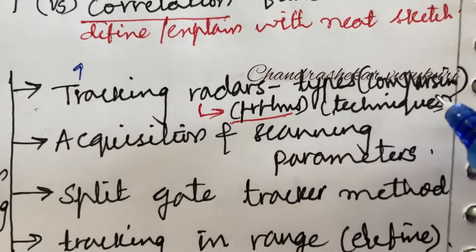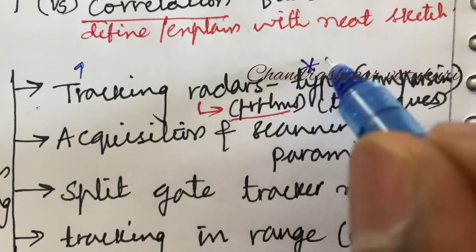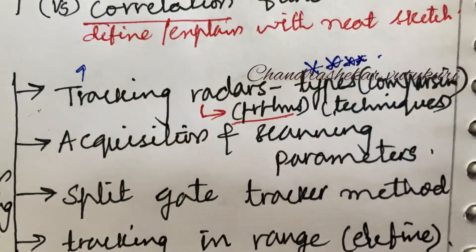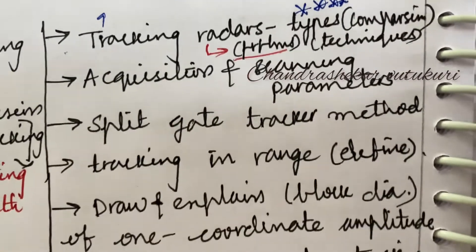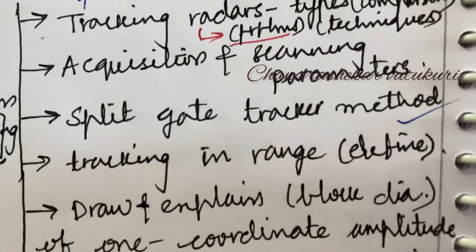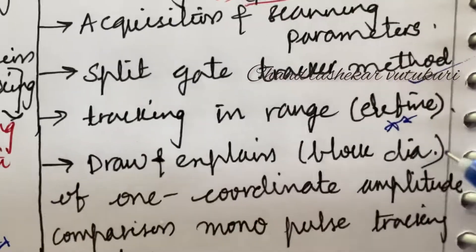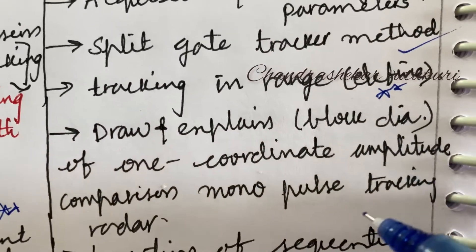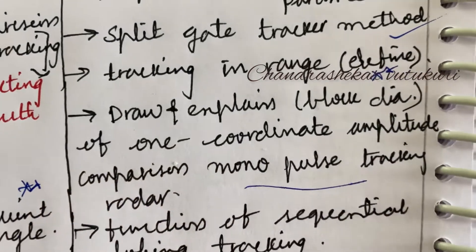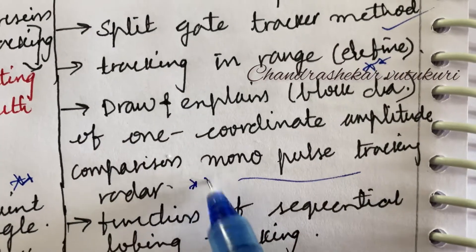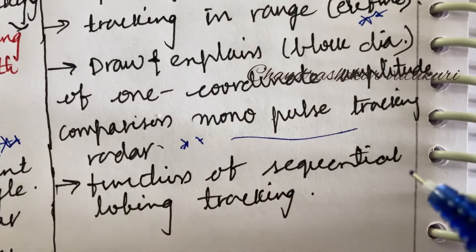The different techniques may be one of the gunshot questions which may occur in the question paper for a five-mark question. Acquisition and scanning parameters, and the split gate tracking method, are said to be top-most questions. Tracking in range is a short question. Draw and explain the block diagram of one-coordinate amplitude comparison monopulse tracking radar — related to monopulse tracking radar you are going to get one question for sure. The function of sequential loading tracking is also important.